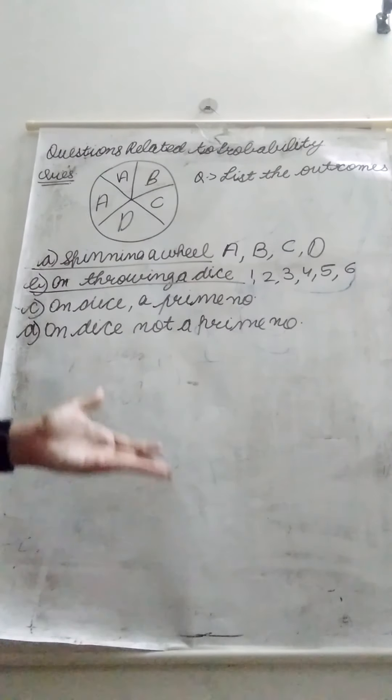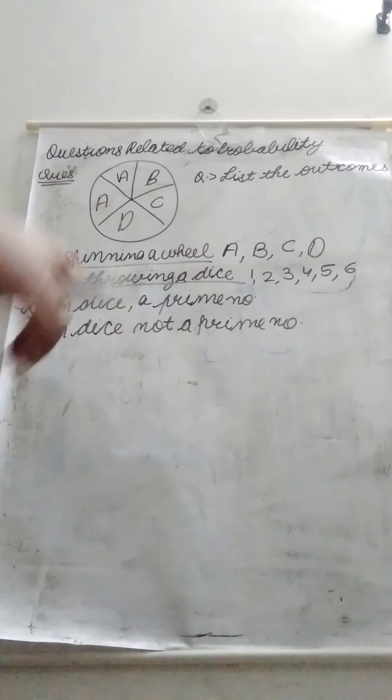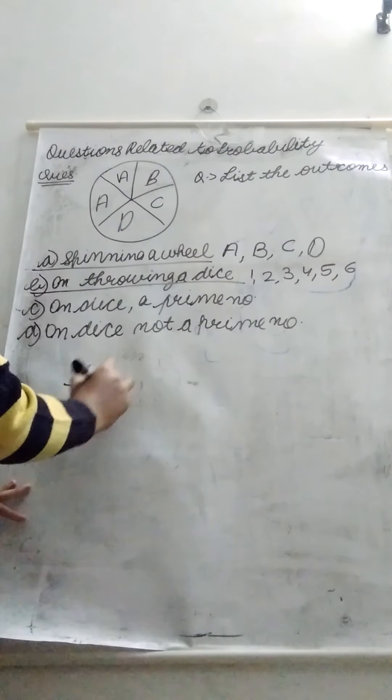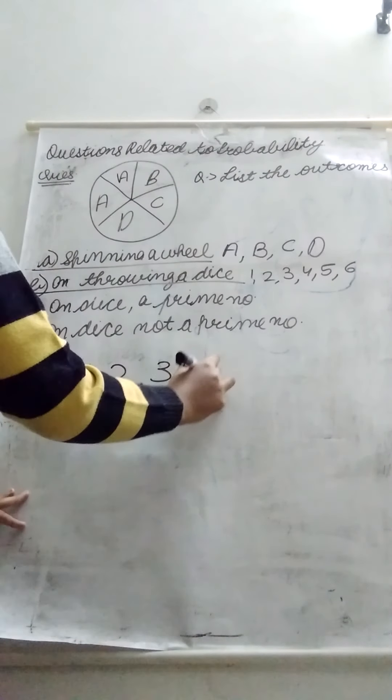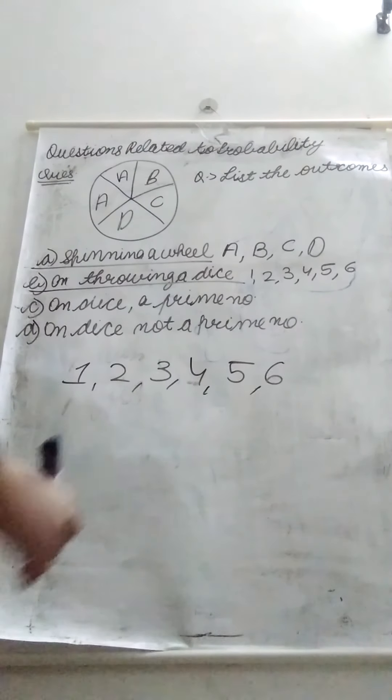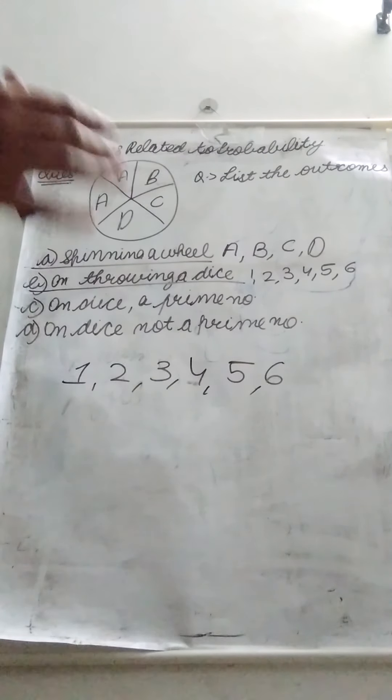On dice a prime number. Whatever dice is, whatever number is, what outcome will become? How many numbers we can tell you guys? One, two, three, four, five, six. So what are the prime numbers?